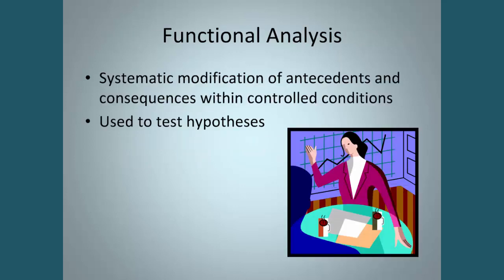Once you have a hypothesis about when the behavior happens — say it happens most likely in the morning during math, especially if they're mowing the lawn outside — then you want to systematically modify those things. Maybe let them do math at a different time of day, or modify the amount of noise that's happening. So you systematically modify the antecedents, what happened before, and the consequences, so that you can test your hypothesis.